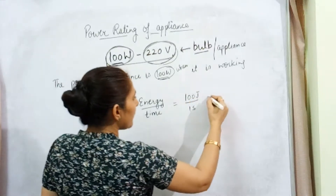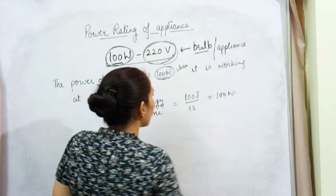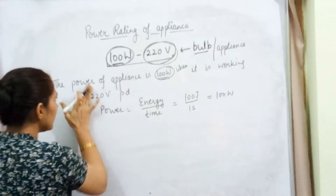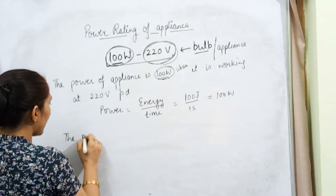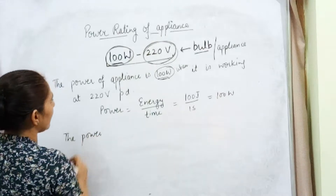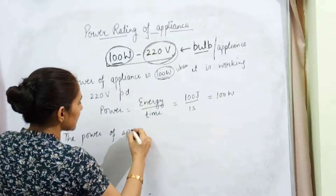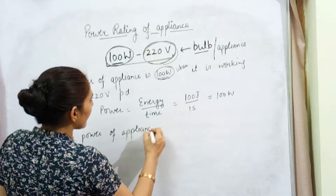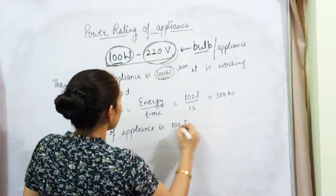100 joule upon 1 second gives 100 watt. So how can we write down this in terms of energy? The power of the appliance is 100 joules — wait, I am writing it in terms of energy.